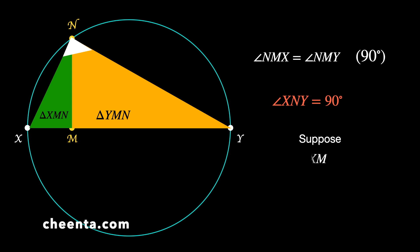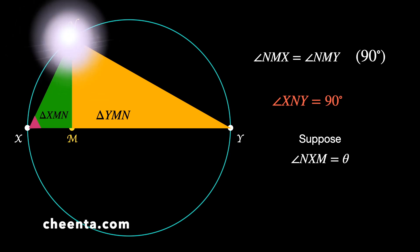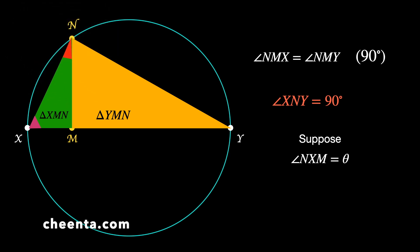So suppose that we know that angle XNY is 90 degrees. And suppose angle NXM is theta. NXM is this angle in purple. Suppose that's theta. Then angle XNM is 90 minus theta, the angle in red.